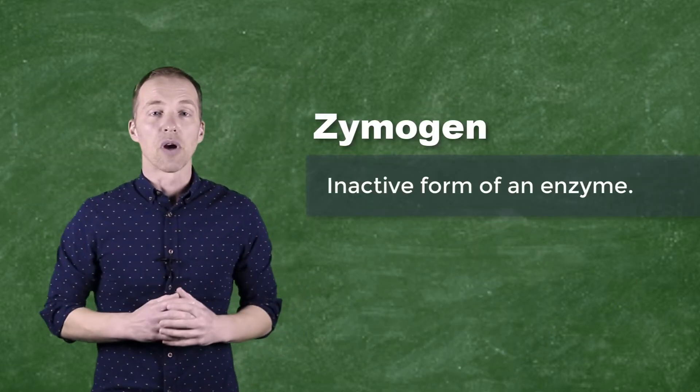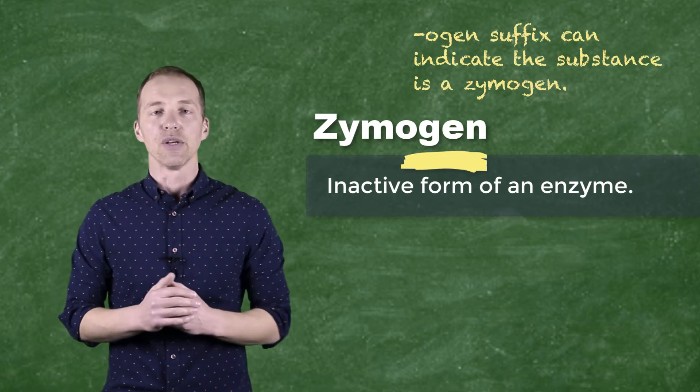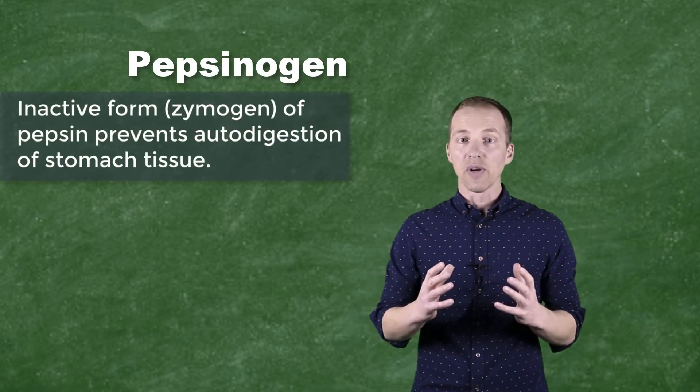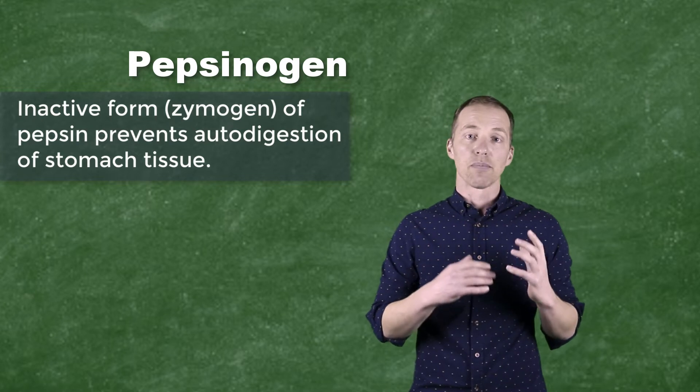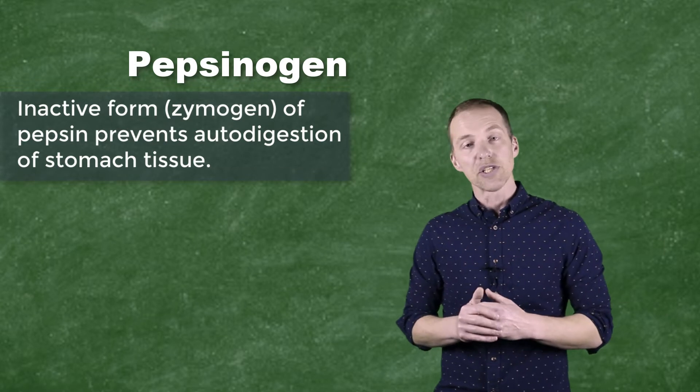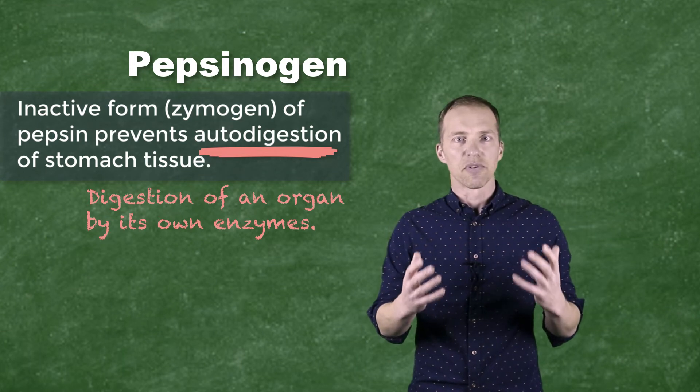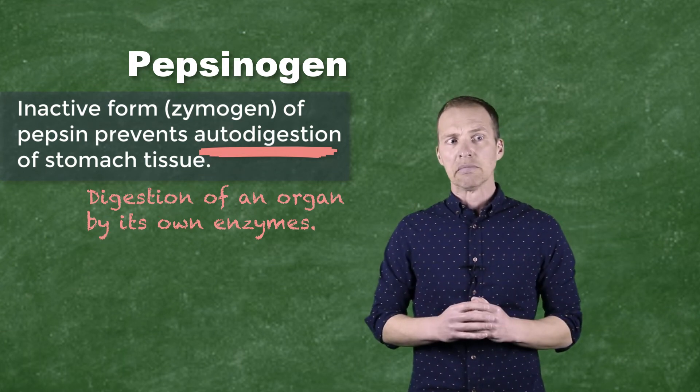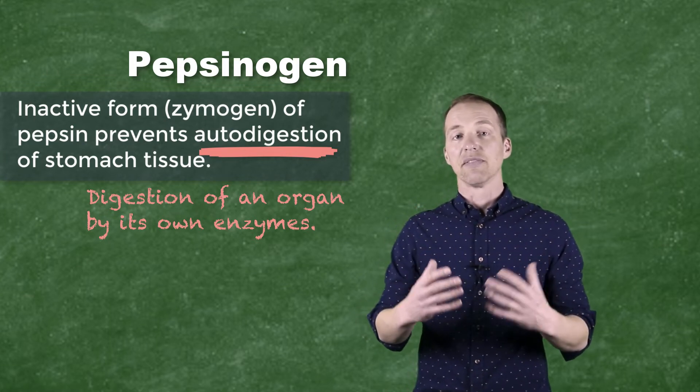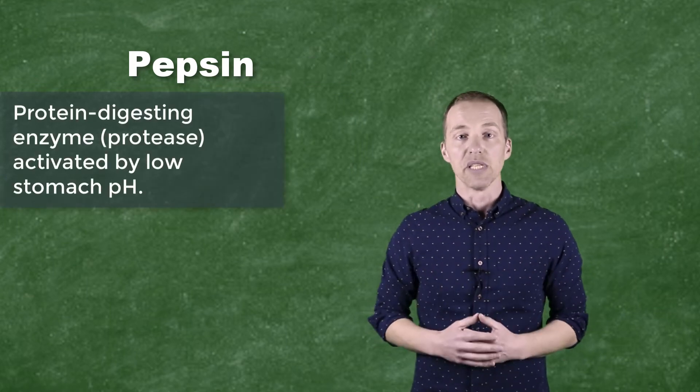Now inactive forms of enzymes are referred to as zymogens and anytime you see ogen on the end of something that may indicate that you have a zymogen. So the zymogen that's produced in the stomach is pepsinogen. Now it's an inactive form of a protease, that is an enzyme that breaks down proteins. And the reason that it's inactivated, or the reason that it's not active initially, is because it prevents autodigestion, which sounds like a really efficient thing, but really it just means it prevents the stomach from eating itself. So when food comes into the stomach and the pH of the environment is lowered, that lower pH environment actually activates the pepsinogen to form pepsin, which is one of the enzymes that helps break down proteins in the body.